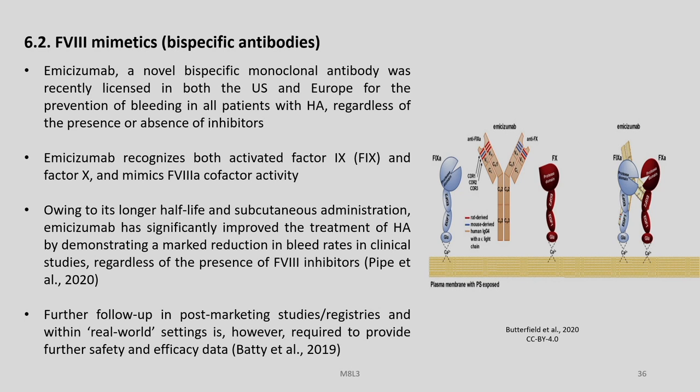Factor 8 mimetics or bispecific antibodies: Emicizumab, a novel bispecific monoclonal antibody, has been licensed in both the US and Europe for the prevention of bleeding in all patients with Haemophilia A regardless of the presence or absence of inhibitors. Emicizumab recognizes both activated factor 9 and factor 10 and mimics factor 8A cofactor activity, owing to its long half-life and subcutaneous administration. Emicizumab has significantly improved the treatment of haemophilia A by demonstrating a marked reduction in bleeding rates in clinical studies, regardless of the presence of factor 8 inhibitors. Further follow-up in post-marketing studies is however required to provide further safety and efficacy data.